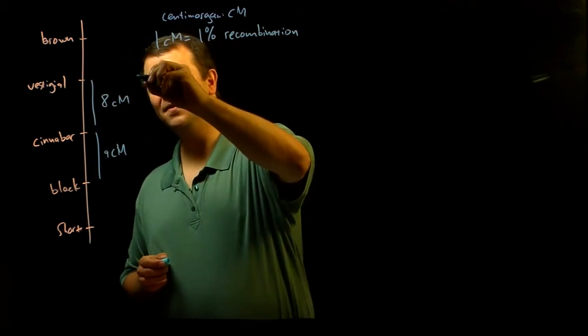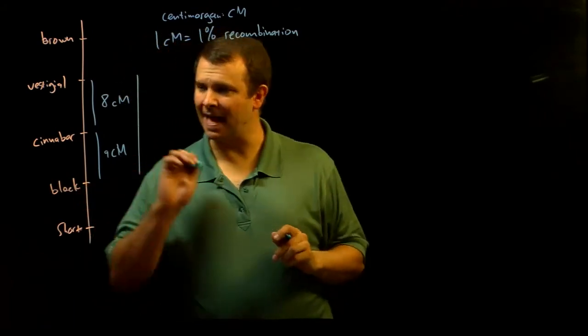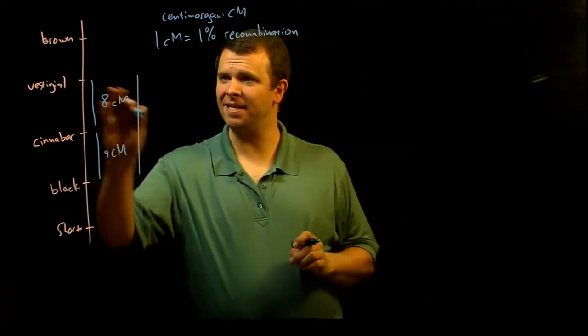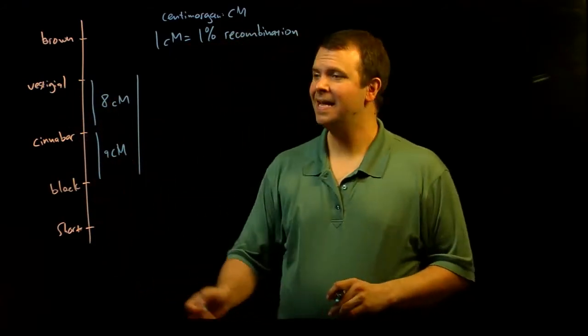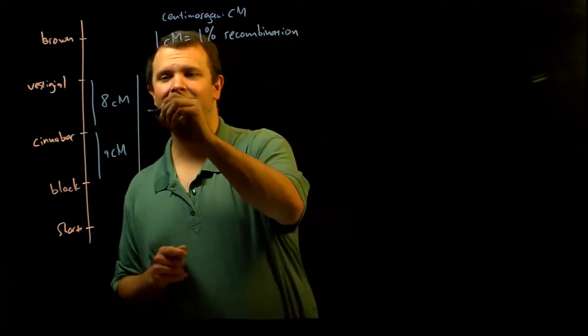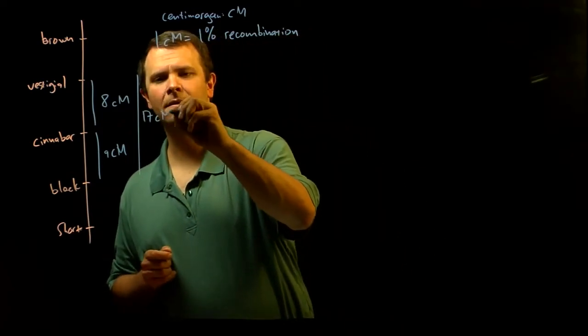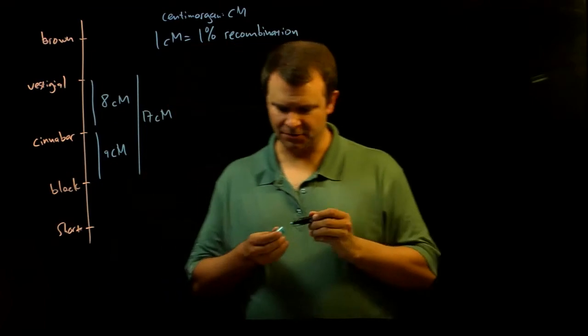Then the distance between the black body gene and the vestigial wings gene is just nine centimorgans plus eight centimorgans. That's pretty straightforward.